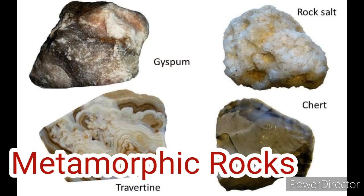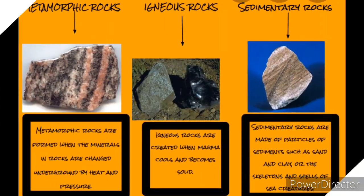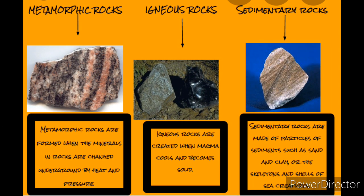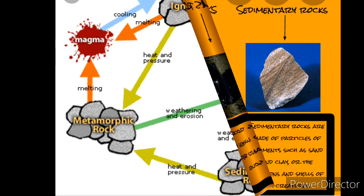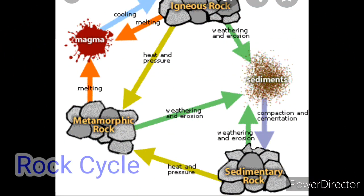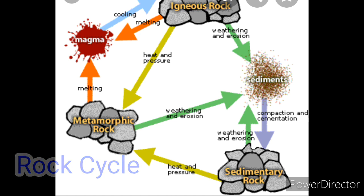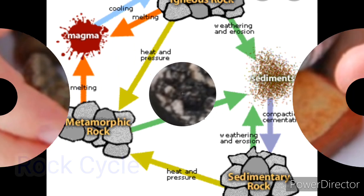The last type is metamorphic rocks, which are formed through high temperatures and pressure. The formation of these rocks never stops — it keeps going and changing from one type to another due to various conditions. This activity is what we call the rock cycle.